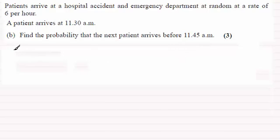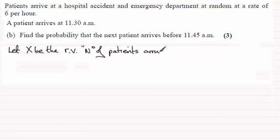So let's start by defining a random variable. Let's just say let X be the random variable. If we used X in the previous part we're now redefining it. Let X be the random variable and we'll have it as the number of patients arriving per 15 minutes.